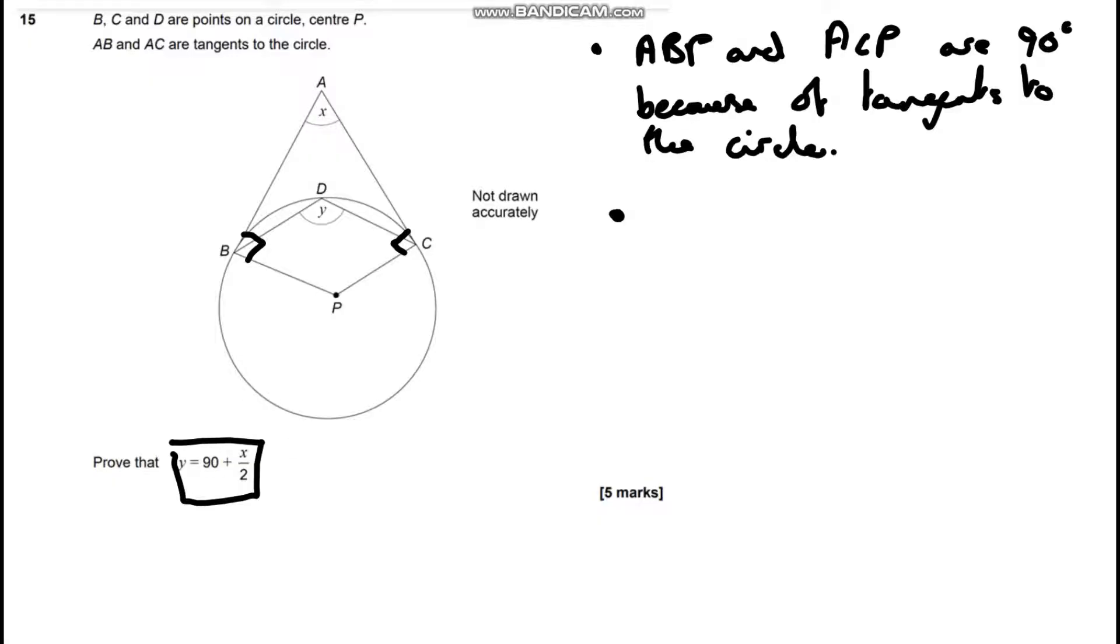We can then work out, because we've now got a four-sided shape ABPC, that P, this angle here BPC, is going to equal 360 take away 90, take away 90, take away x, which is going to be 180 take away x, and that is because of angles in a quadrilateral.